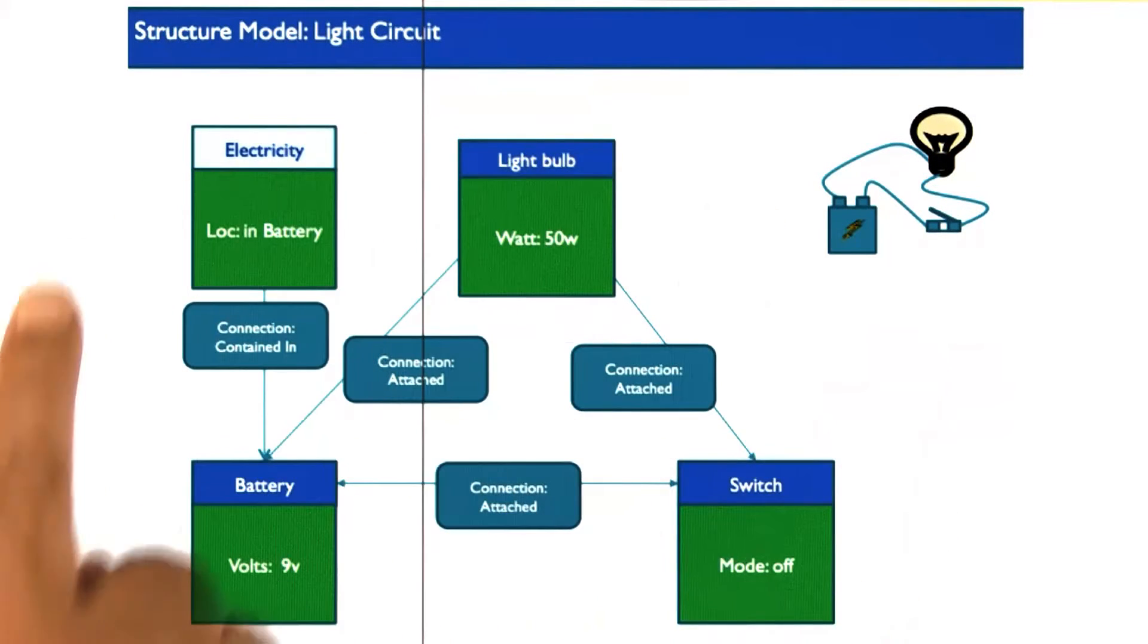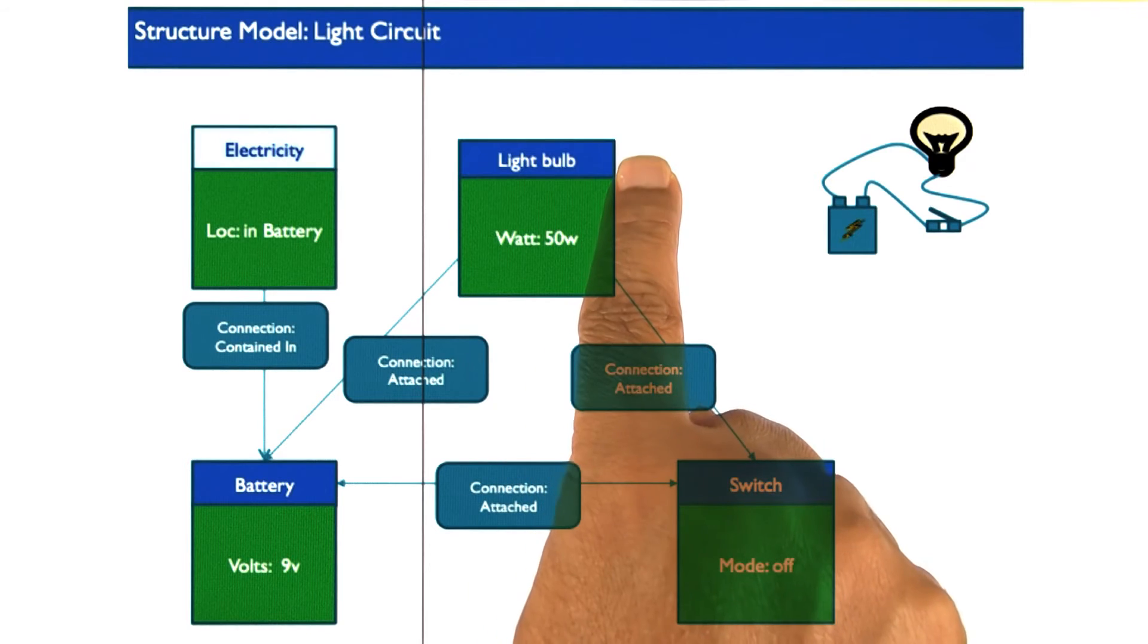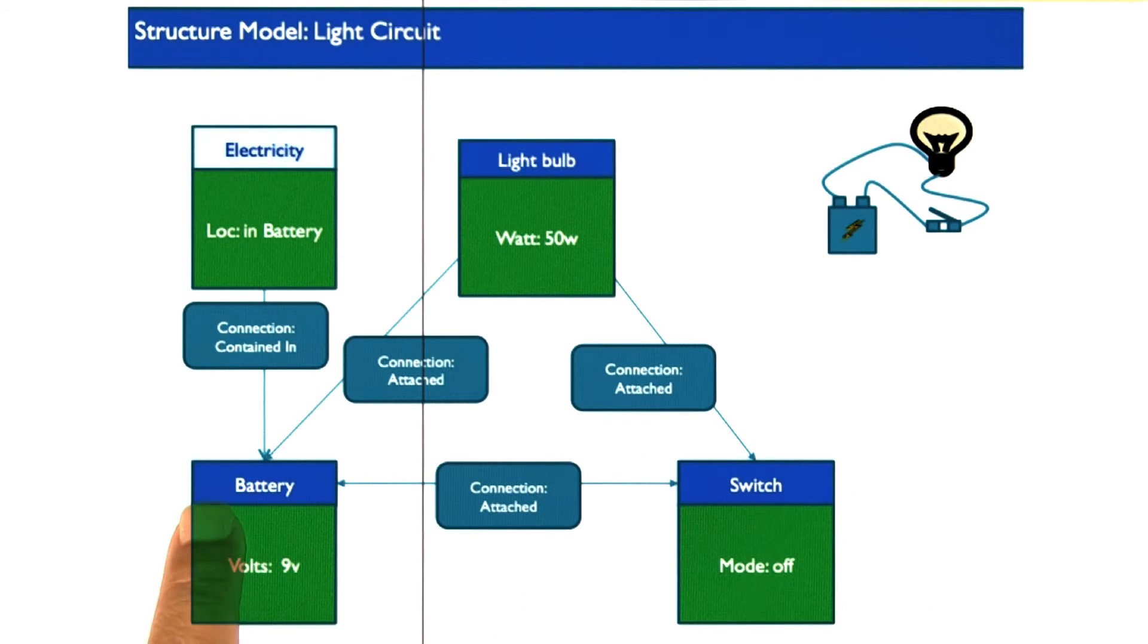Here is a representation of the structure of the flashlight. Here is the light bulb, the switch, and the battery. And they are connected. All of them are attached.